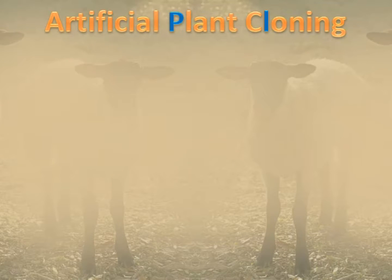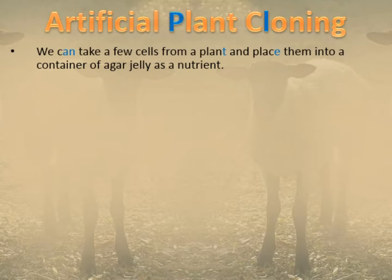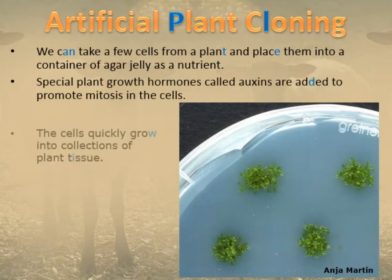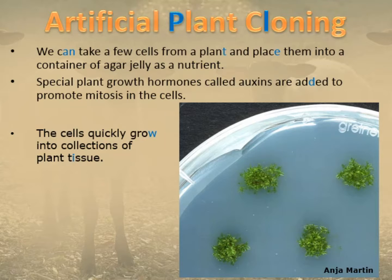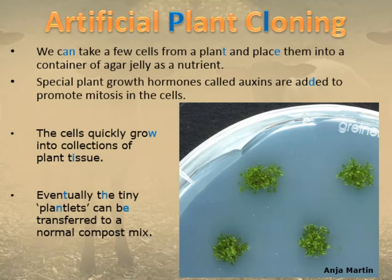Let's go through plant cloning again. We take a few cells from a plant and put them in a container of agar jelly — the nutrient often used — and add special plant hormones called auxins to promote mitosis. Once that's happening, microstructures begin to form. Tiny little leaflets start to form as these cells grow into collections of plant tissue — not just cells but actual constructed plant tissue — and eventually we have plantlets that we can transfer into a normal compost mix where they will develop a normal root structure.